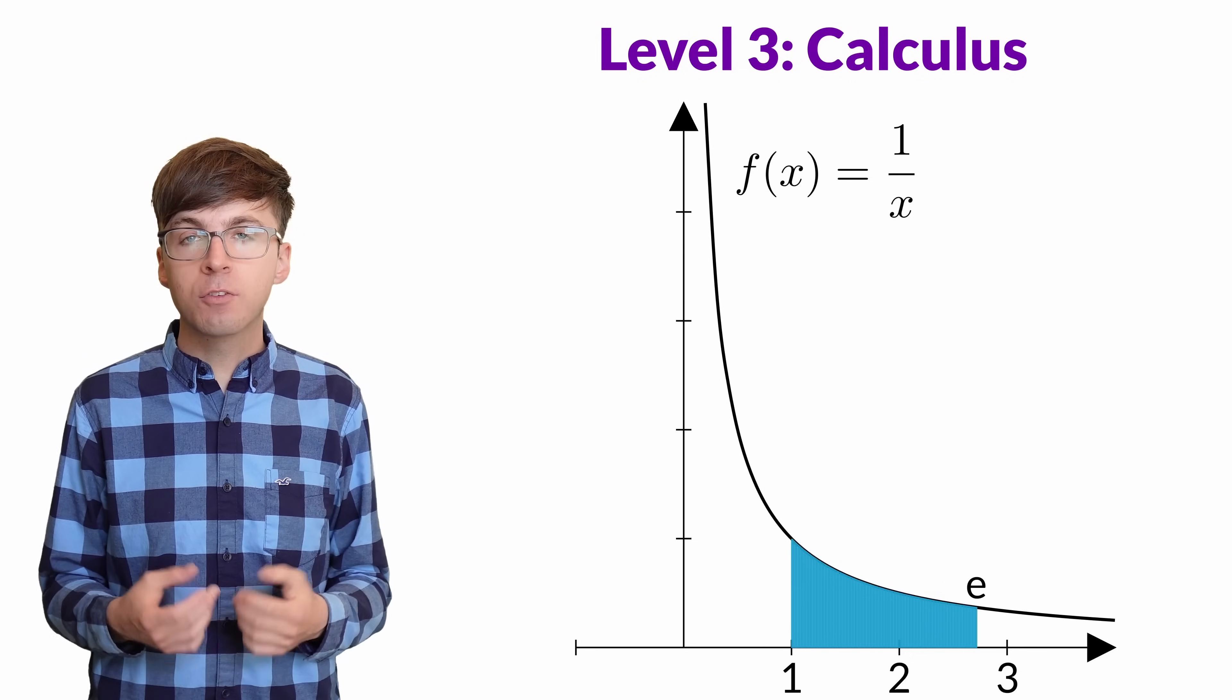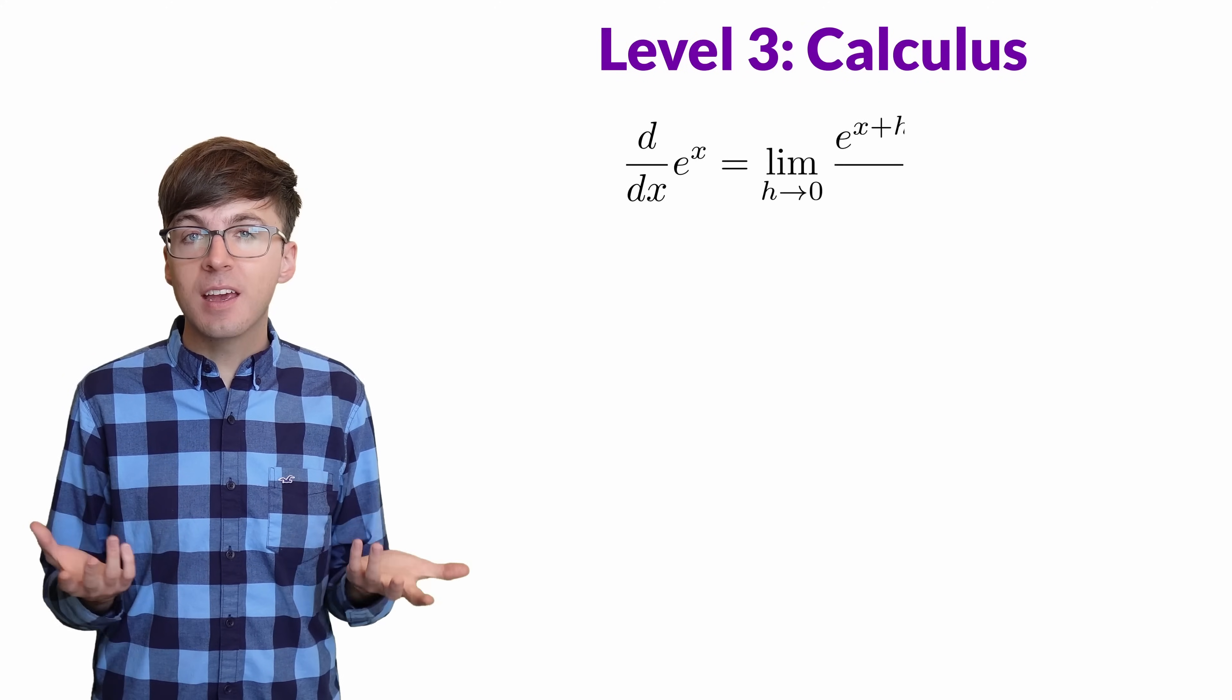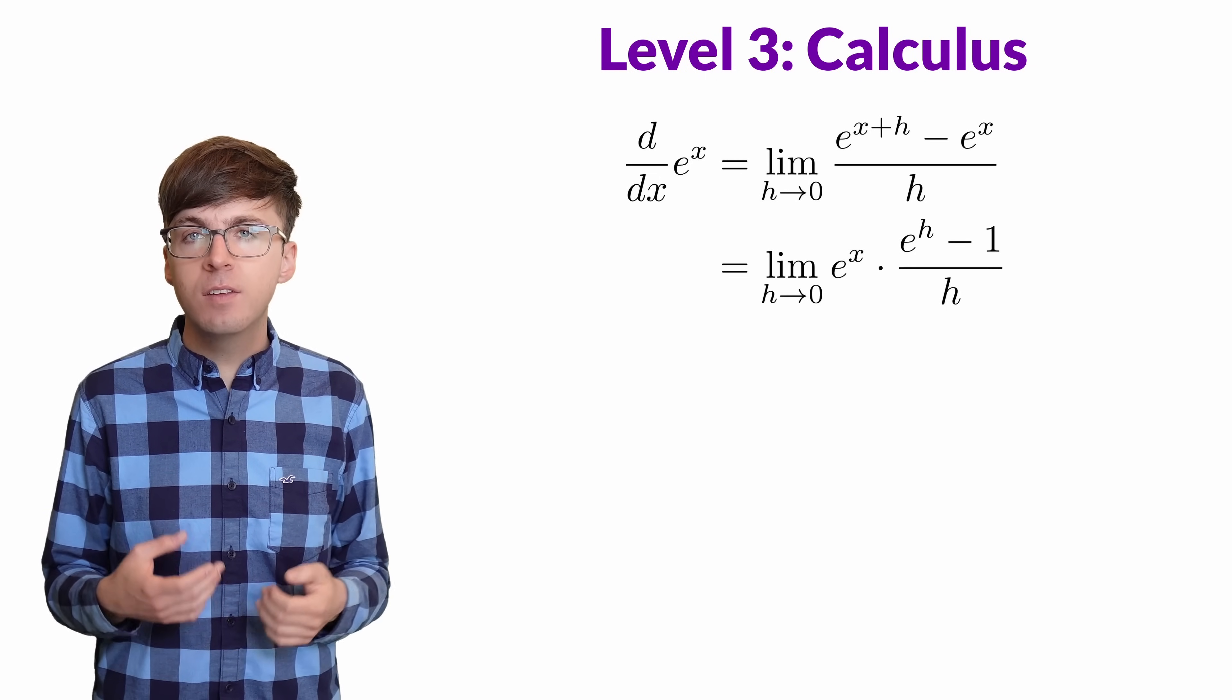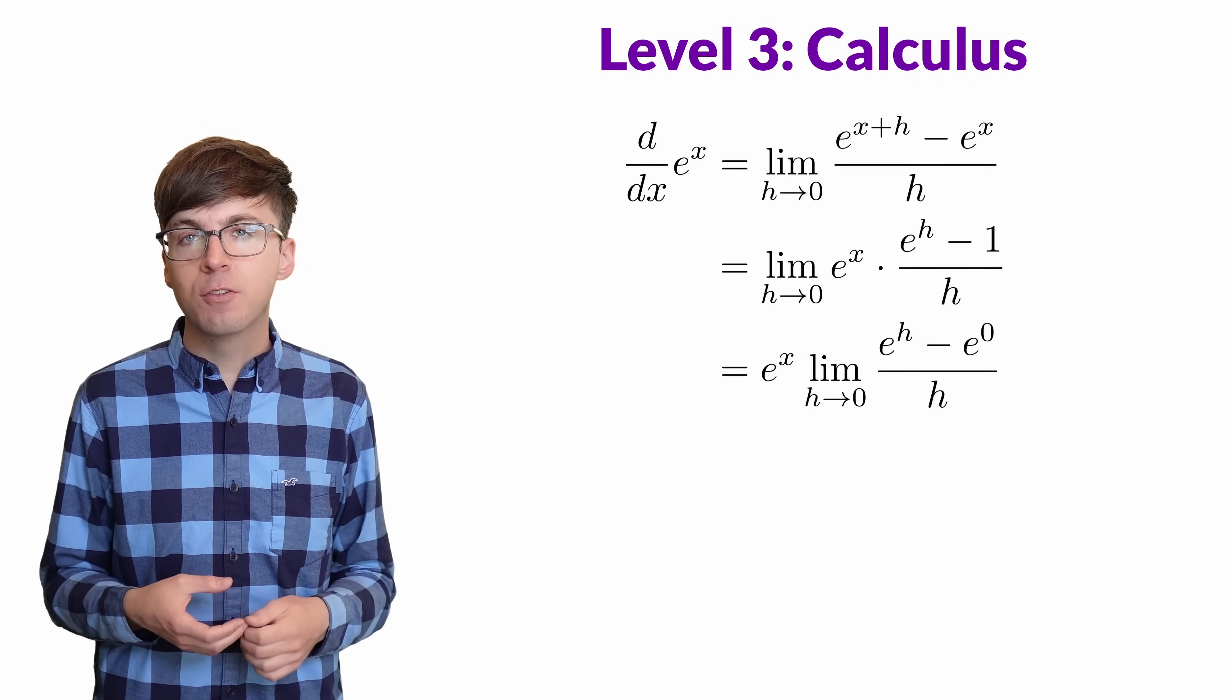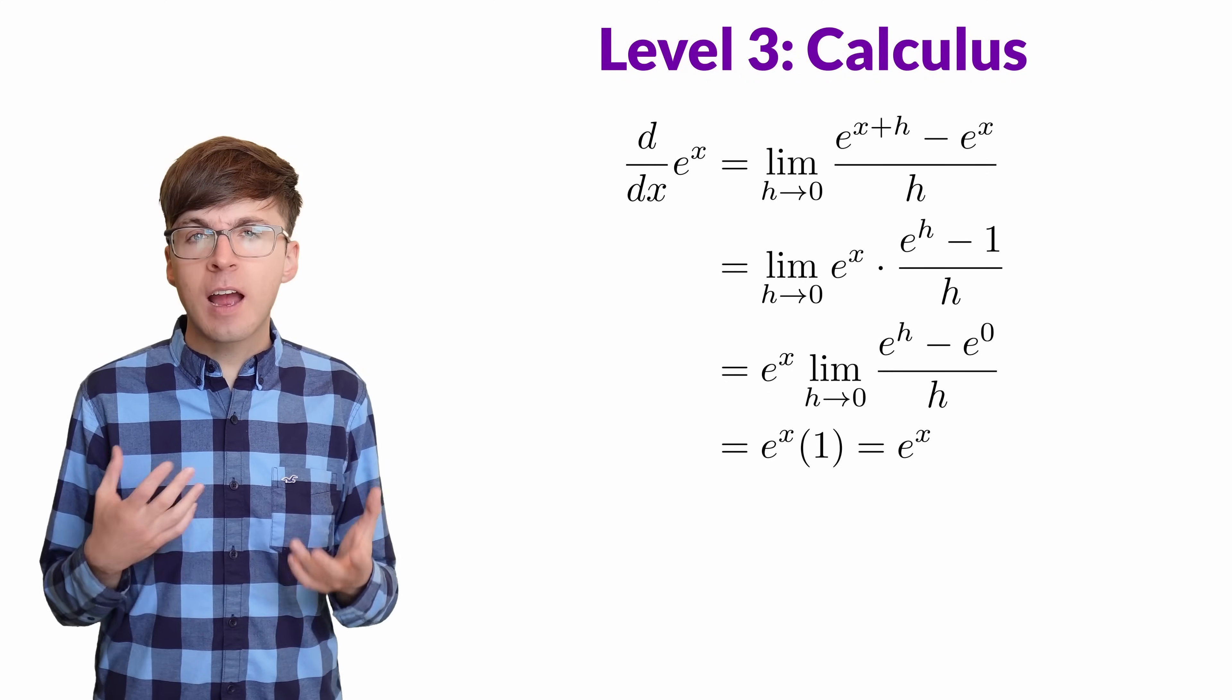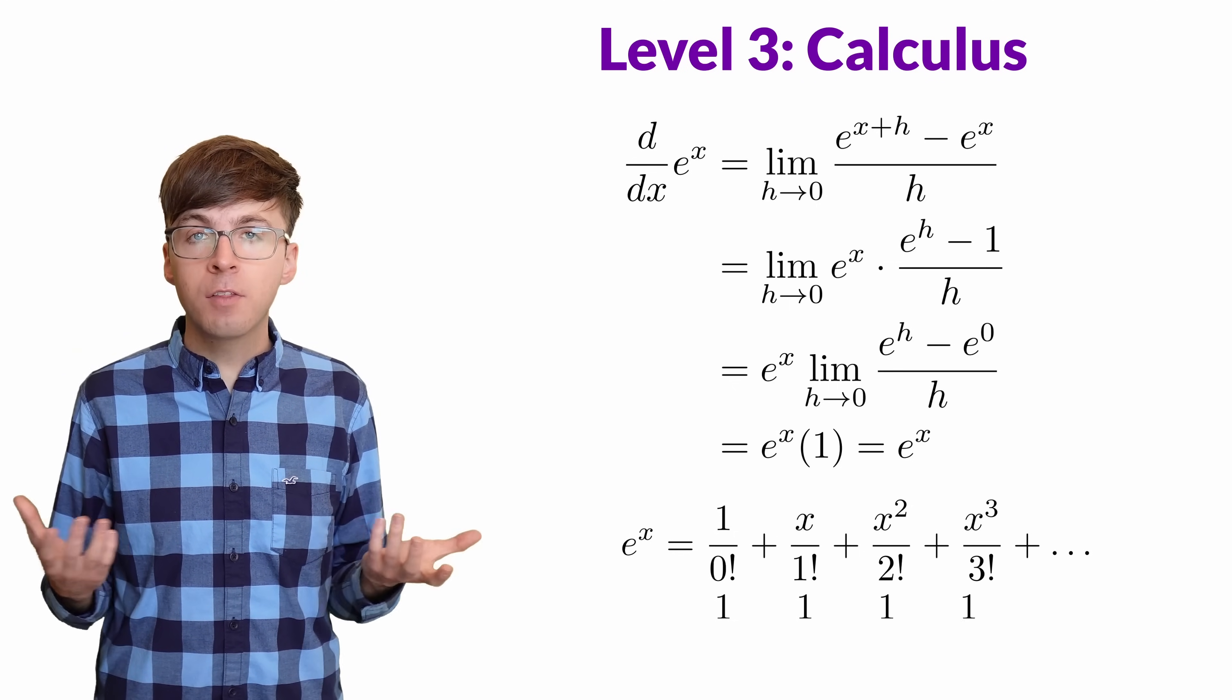We can also find the Taylor series for the function e to the x. We already know the derivative of e to the x at x equals 0 is 1. To find the derivative everywhere, we can use the limit definition. We take the limit as h approaches 0 of e to the x plus h minus e to the x all over h. We can factor out e to the x and we're left with the limit as h approaches 0 of e to the h minus 1 all over h. e to the 0 is 1, so that's the same as e to the h minus e to the 0 over h. This is the definition of the derivative of e to the x at x equals 0, which we just said is 1. So the derivative of e to the x is just itself. And no matter how many derivatives we take, we always get e to the x. And when we evaluate at x equals 0, we always get 1. So the Taylor series for e to the x has this nice form, giving us another expression for e.